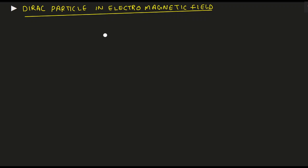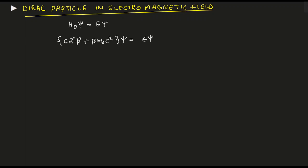Welcome. In this video lecture we are going to discuss the Dirac particle in an electromagnetic field. For that we need to know the Dirac equation without the electromagnetic field: H_D psi equals E psi, where H_D is c times alpha dot p plus beta m_0 c squared acting on psi, giving us E psi.